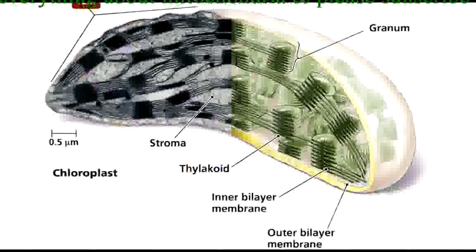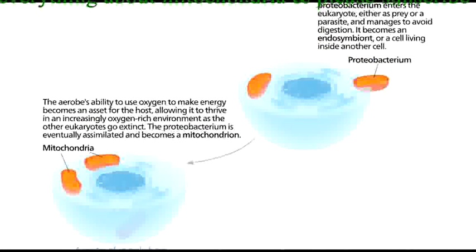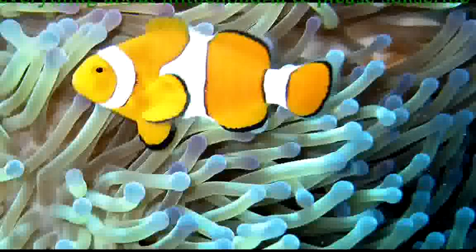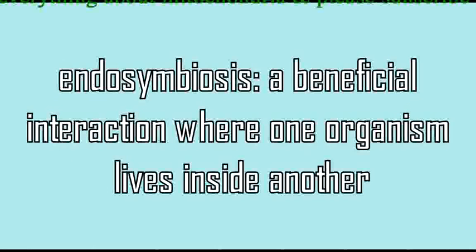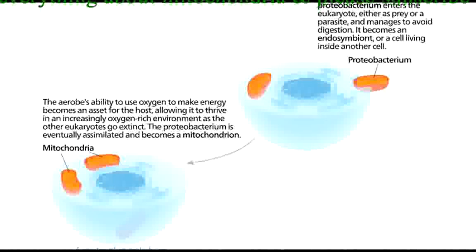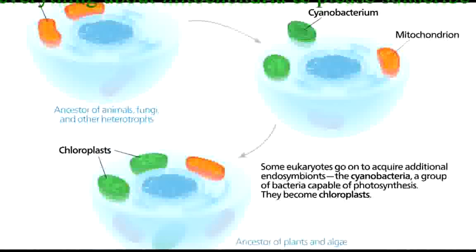Many of the similarities between mitochondria and chloroplasts can be explained by their similar evolutionary origin. The endosymbiotic theory states that over a billion years ago, a large eukaryote ancestor engulfed an aerobic prokaryote and developed a symbiotic relationship. Symbiosis describes a mutually beneficial interaction between two species, and endo means inside. Endosymbiosis refers to a beneficial interaction where one organism lives inside another. Over time, the engulfed aerobic prokaryote evolved into mitochondria. Some mitochondria-containing eukaryote later engulfed and developed a symbiotic relationship with a photosynthetic cyanobacterium, which evolved into chloroplasts.